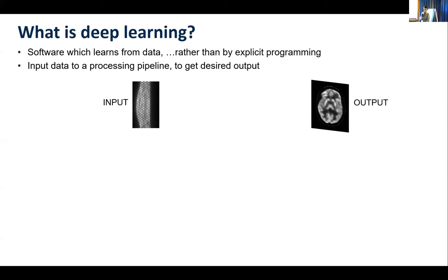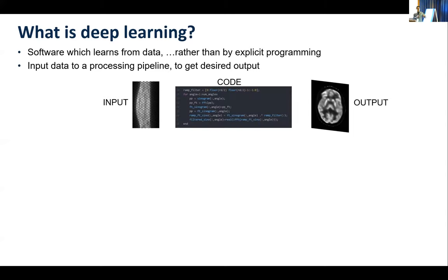Conventionally, in image reconstruction, we would analytically — I've got a very crude filter back projection algorithm written there. Normally you'd say: I throw a Fourier transform over all the rows, do a ramp filter, inverse Fourier transform, then back project, and that would give me a reconstruction. That's analytic — our knowledge being used to write code.